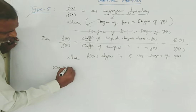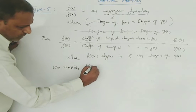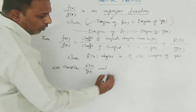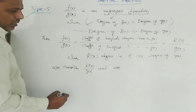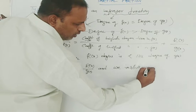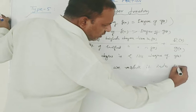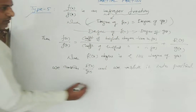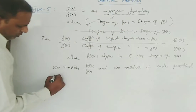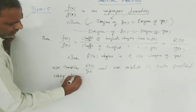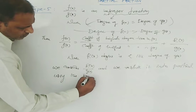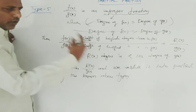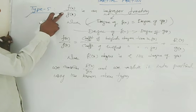We consider r of x by g of x and resolve it into partial fractions using the null types — types 1, 2, 3, and 4. So f of x by g of x is a proper fraction.